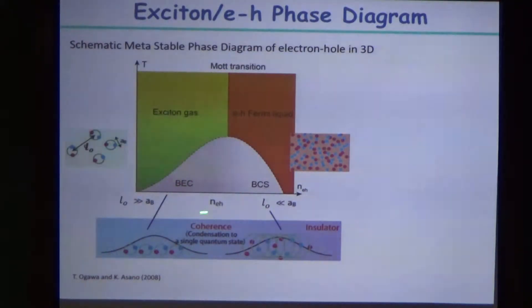Let's say this is exciton density that we can tune. Simply, as you increase exciton density, the Bose-Einstein condensation temperature increases. If you're using the simple mean field argument, you can easily understand this.